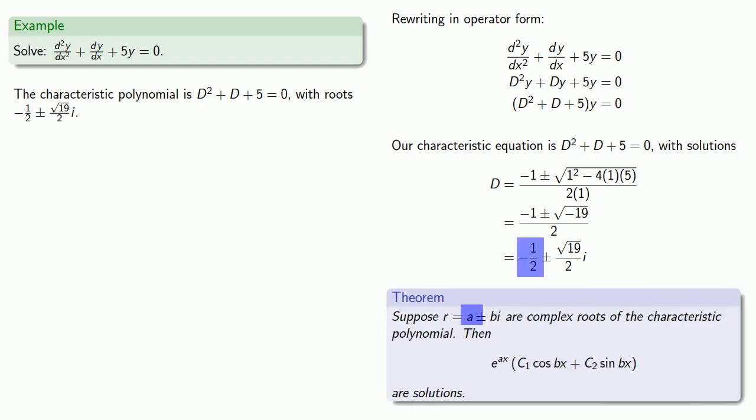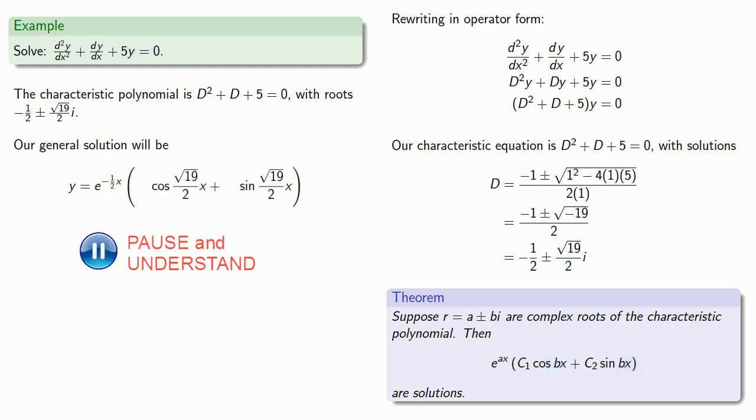And they turn out to be complex roots. So the real part of the root will become an exponential, e^(-1/2*x). The complex component, without the i, is going to become the argument of our cosine and sine functions. And our constants of anti-differentiation are going to show up as coefficients of cosine and sine, and so our general solution will look like this.